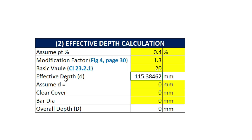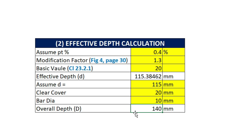So we got the effective depth of the slab as 115.38. Let's assume this as 115 mm and provide 20 mm clear cover. The diameter of bars is assumed to be 10 mm, and we will get the overall depth of the slab equal to 140 mm.